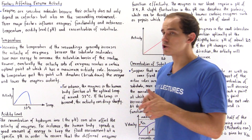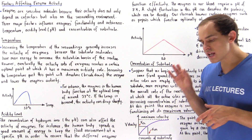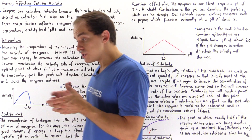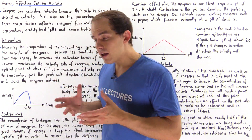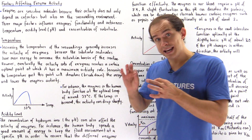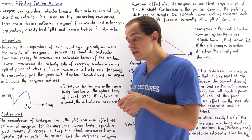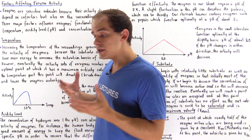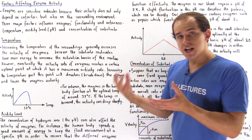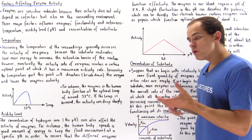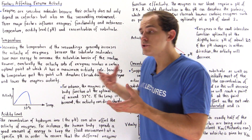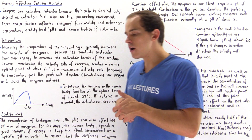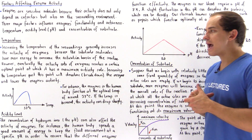Let's begin with temperature. Increasing the temperature of the surroundings in which our protein enzyme is found generally initially increases the rate or the activity of our enzyme. This is primarily because by increasing the temperature we give the substrate more energy to overcome that activation barrier.